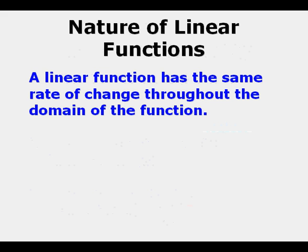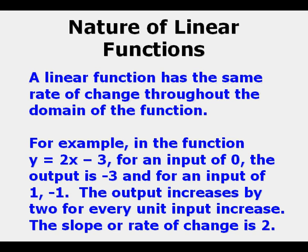A linear function has the same rate of change throughout the domain of the function. For example, in the function y equals 2x minus 3, for an input of 0 the output is negative 3, and for an input of 1 it's negative 1. The output increases by 2 for every unit input increase. The slope or rate of change is 2.